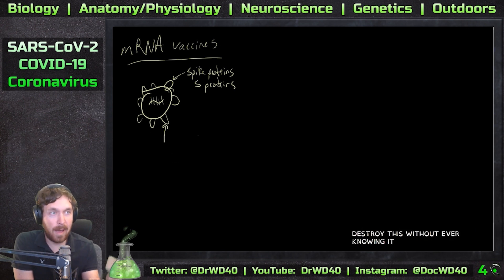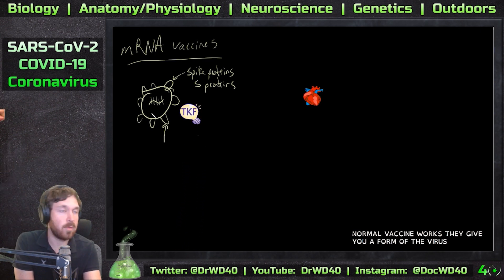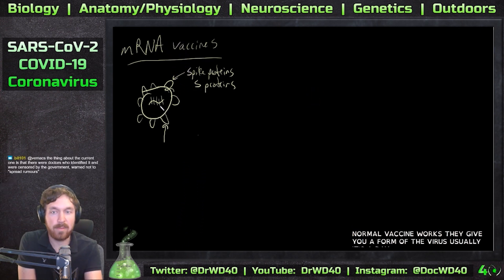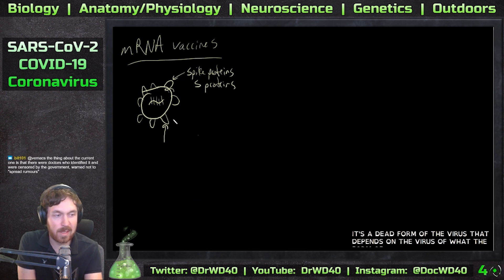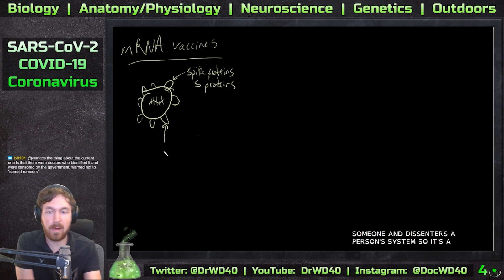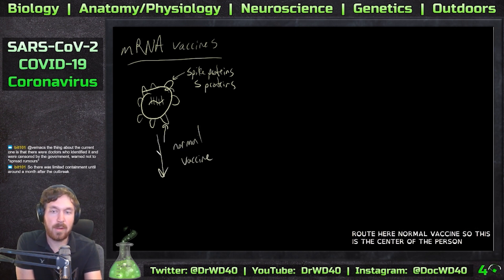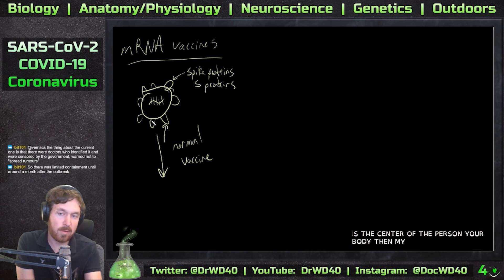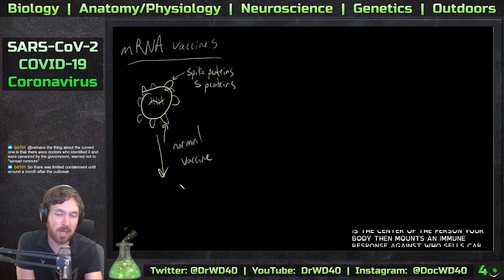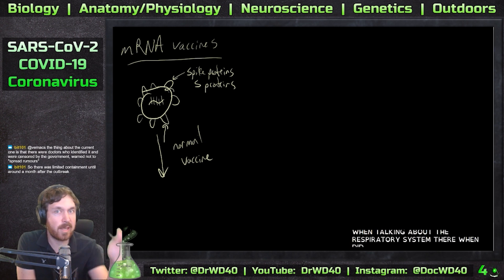How a normal vaccine works: they give you a form of the virus — usually a dead form, though it depends on the virus. You give it to someone, it enters their system, and then your body mounts an immune response against these cells, kind of like we just talked about with the respiratory system, when the dendritic cell comes in.